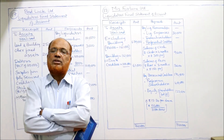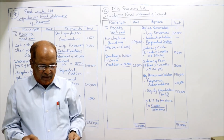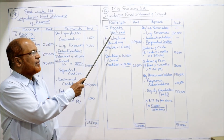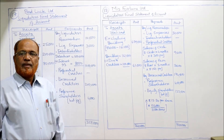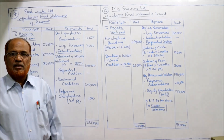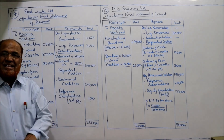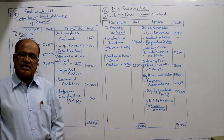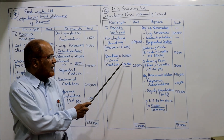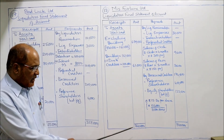Prepare the liquidator's final statement of receipts and payments. Assets realized excluding building: 8,40,000 minus 1,61,000 = 6,79,000. Building was pledged with Patel; building realized 1,61,000, loan from Patel 1,00,000, surplus = 61,000. Total receipts = 7,40,000.